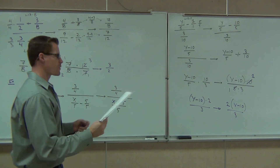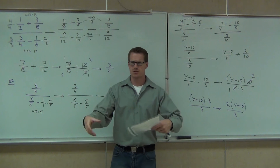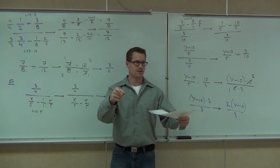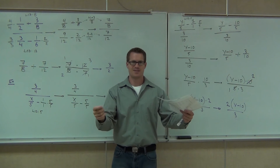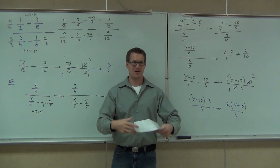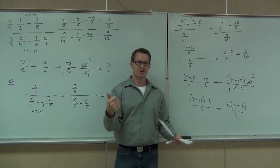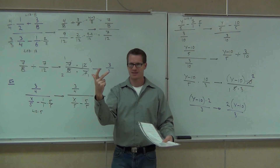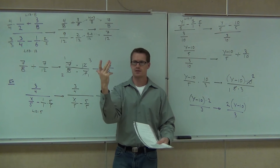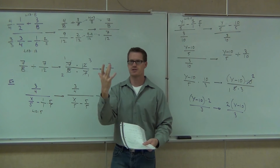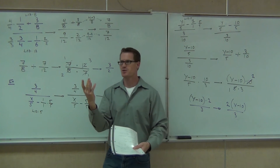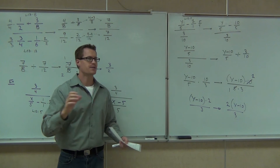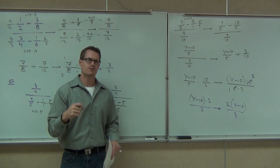The last thing we're going to talk about today — we're going to start order of operations. What is the order of operations we've been using? Parentheses first, exponents second, multiplication and division as they occur from left to right, then addition and subtraction as they occur from left to right. Let's try one of these with some fractions and see how it goes. We'll start on this next time.